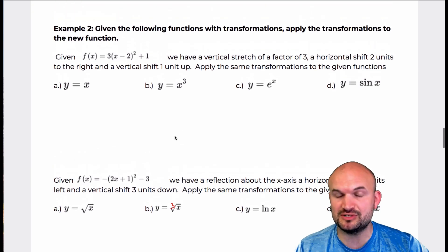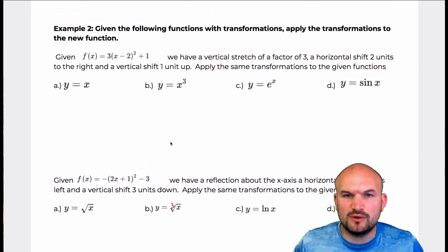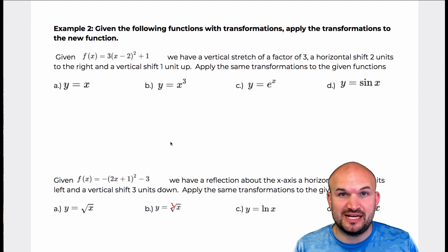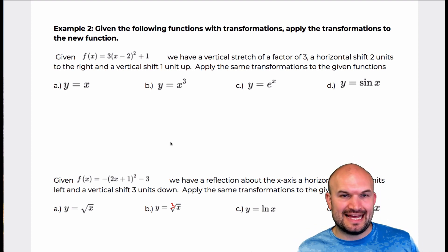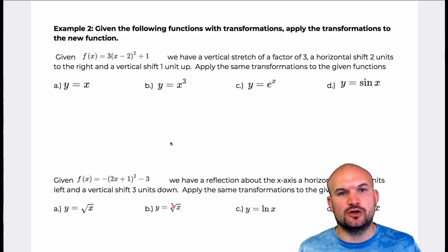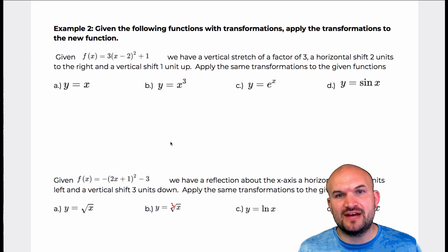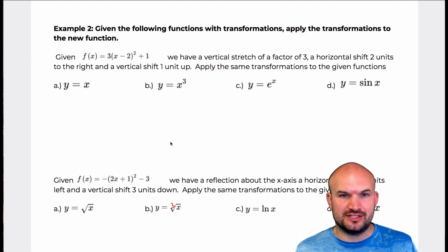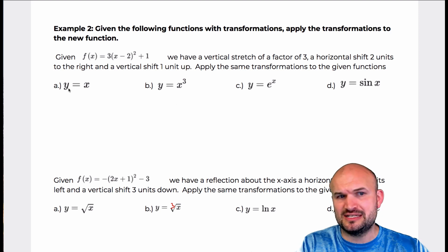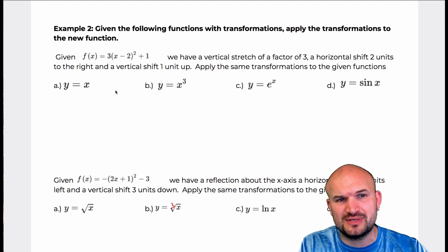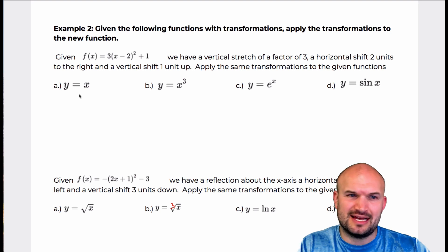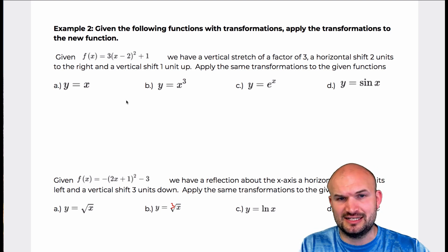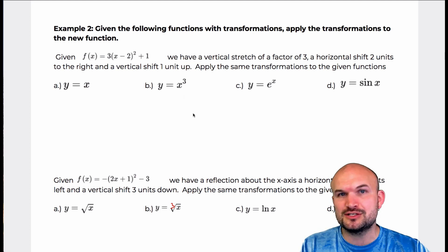In this example number two, we're going to focus on writing the transformations provided to us for different types of functions. This is going to help us understand when transformations are inside the function versus outside the function, so we can differentiate between our values A, B, H, and K. I'm actually going to skip this first example and come back to it last, because even though it's a simple function, it gets a little more confusing as far as transformations.